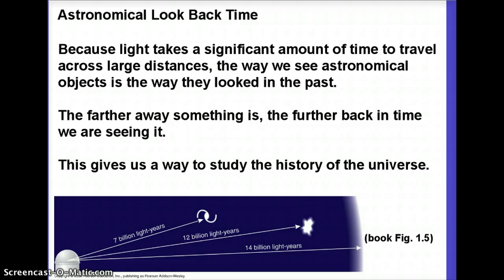So whenever we look at an astronomical object, we're actually seeing the way that it looked in the past. And the farther away something is, the farther back in time we're seeing it. I took this picture from your book, Figure 1.5, and imagine we're looking at several different things.